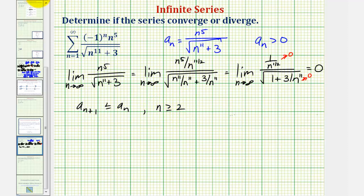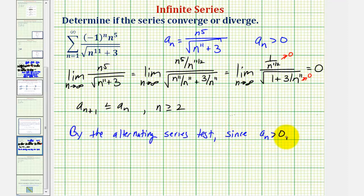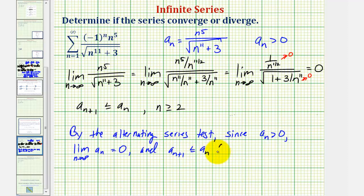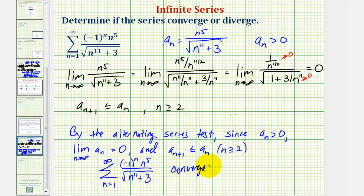To summarize: by the alternating series test, since a sub n is greater than zero, the limit as n approaches infinity of a sub n equals zero, and a sub n plus one is less than or equal to a sub n for n greater than or equal to two, the alternating series converges. Notice how the alternating series converges but the non-alternating series diverges — therefore we can say the alternating series is conditionally convergent, which we'll learn more about in our next lesson.